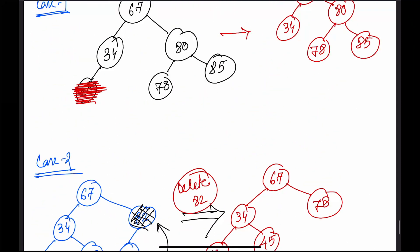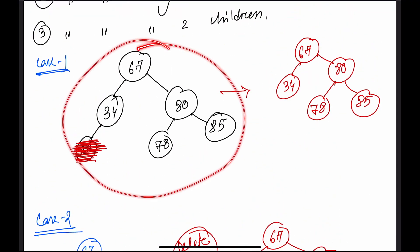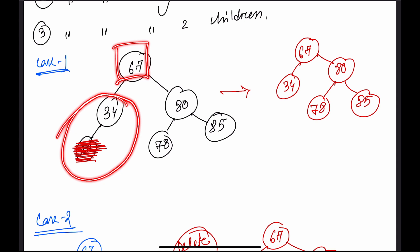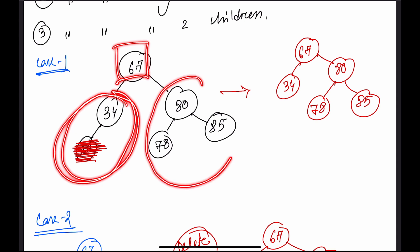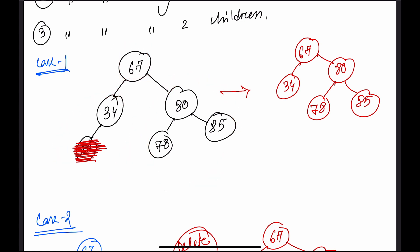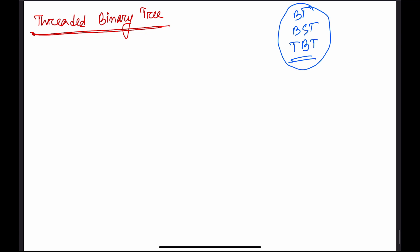For example, for a binary tree, if you want to traverse in pre-order, we print the root node, then call the recursive function for the left subtree, and then call the recursive function for the right subtree. In the case of recursion, there is a dynamic stack.